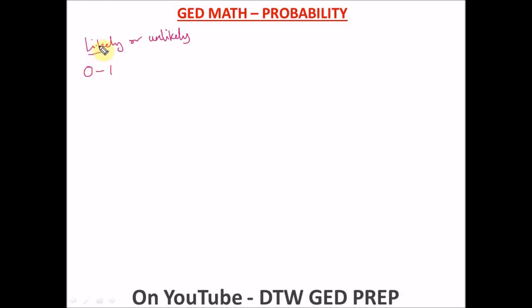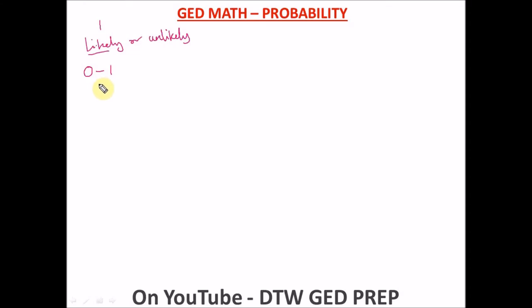In math, probability is calculated between one and zero. If something is likely to happen, its probability is closer to one. For example, the probability of rain in January, February, or March is high. I'm going to treat about six practice test examples on GED probability, and by the end of this video you will really understand probability.